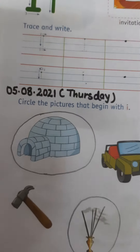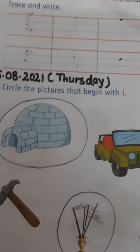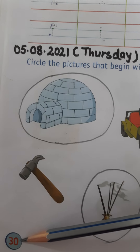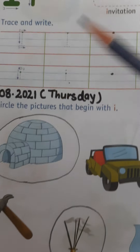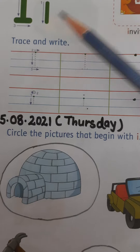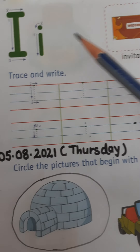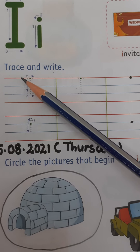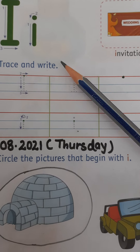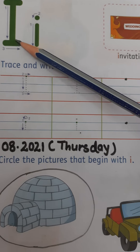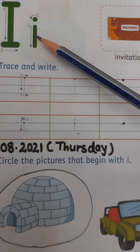Today we are going to do our worksheet which is on your page number 30. So what is our worksheet children? It is trace and write — capital I and small i.